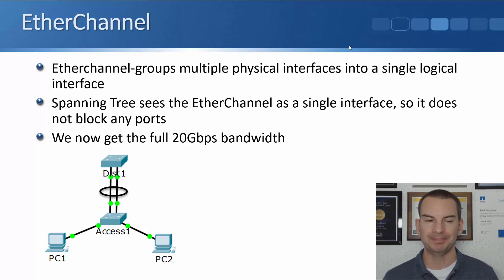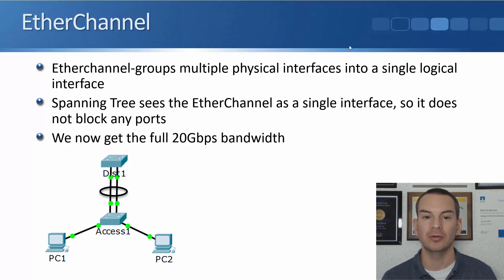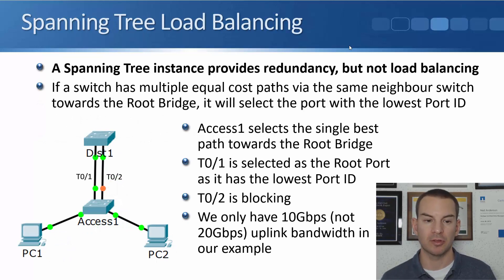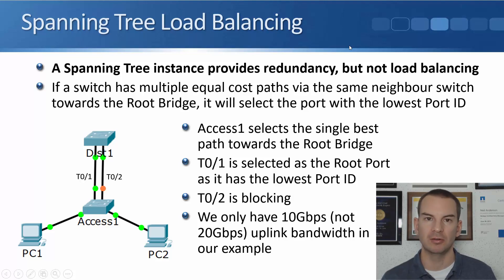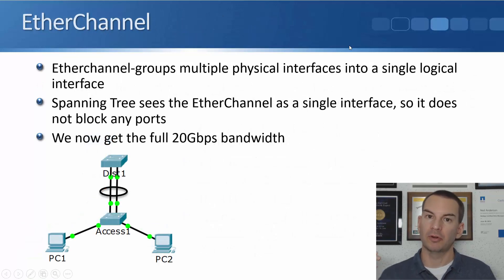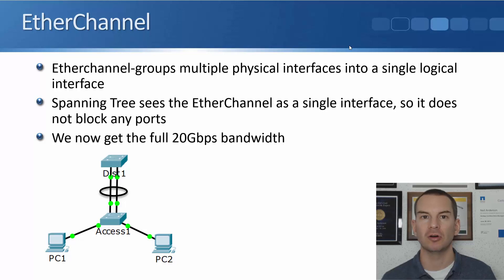The solution is EtherChannel. EtherChannel groups multiple physical interfaces into a single logical interface. Spanning tree then sees that EtherChannel as a single interface, so it doesn't block any ports and we get the full 20 gigs of bandwidth. Without EtherChannel, spanning tree sees a possible loop — traffic could go up 0/1 and back down 0/2 and loop again. But when we configure EtherChannel, spanning tree counts it as a single link on both sides, so there's no potential loop and we get the full 20 gigs.